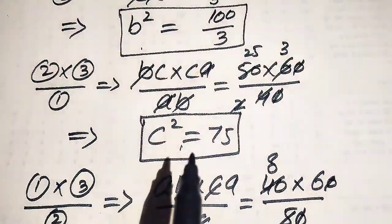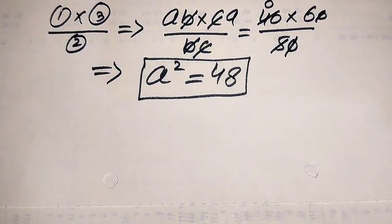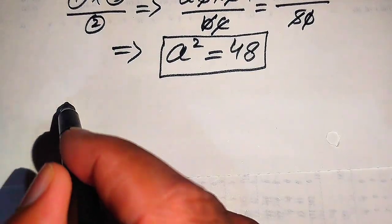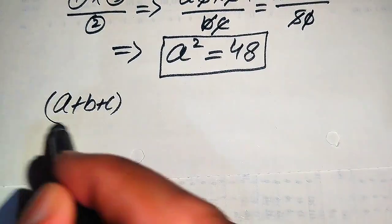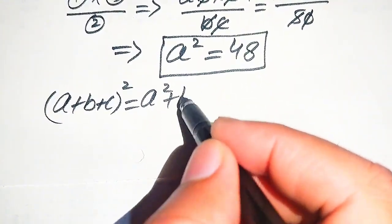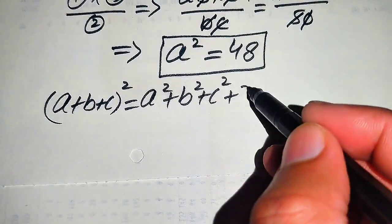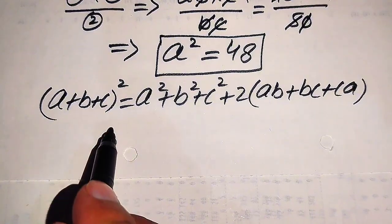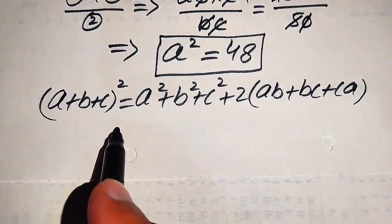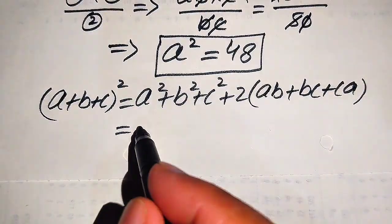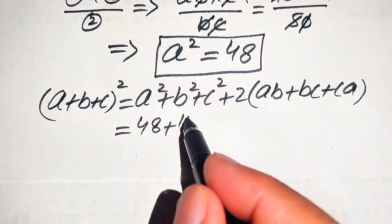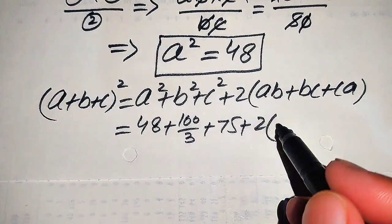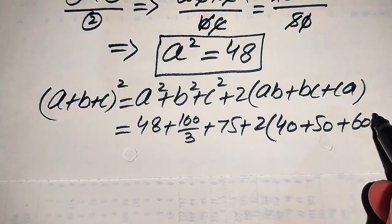So we have the values: A square equals 48, B square equals 100 over 3, and C square equals 75. Now we rewrite the formula: (A plus B plus C) whole square equals A square plus B square plus C square plus 2 times of AB plus BC plus CA. We substitute: 48 plus 100 over 3 plus 75 plus 2 times of 40 plus 50 plus 60.